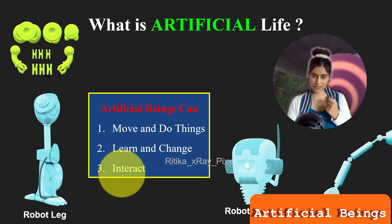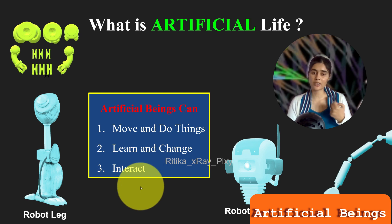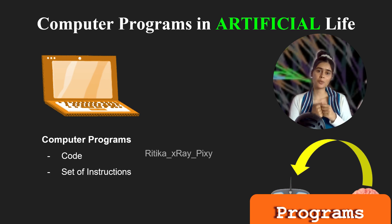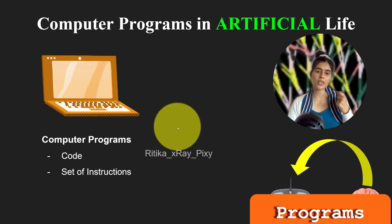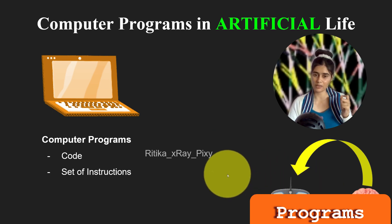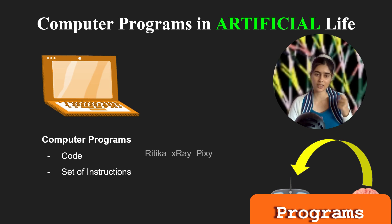The third point is interaction. Artificial beings can interact with each other and work together. For example, in the virtual world they can form groups and help each other out. We can make computer programs or robots that act like animals or humans even though they are not alive, which helps us to understand life better and can be used in different fields of science and technology.